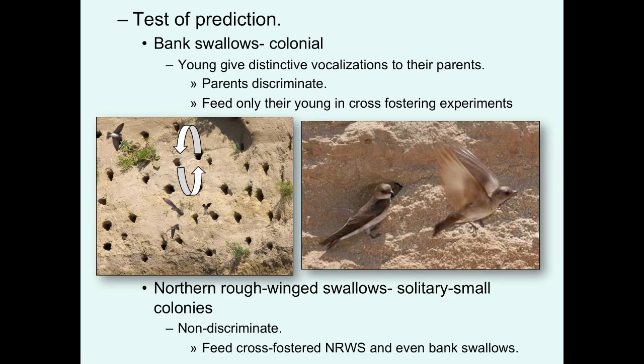If you look at a closely related species, the northern rough-winged swallow, which is typically solitary and sometimes found in small colonies, they are non-discriminate. When cross-fostering experiments are conducted, they'll feed whoever happens to be in their nest, whether unrelated northern rough-winged swallows or even bank swallows. So in colonial species, there has been selection pressure to ensure you feed only your own offspring because there is a great potential to feed the wrong young. In solitary species this is never much of an issue, so we don't see the evolution of signals that would allow for discrimination.